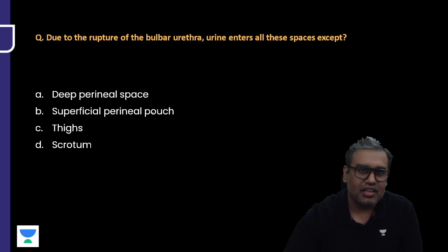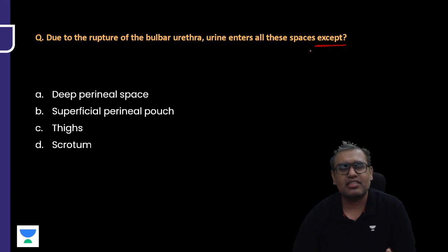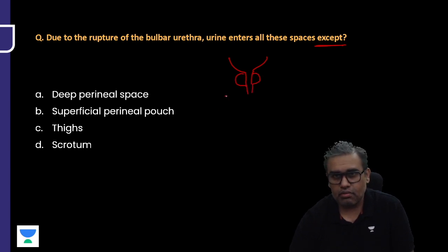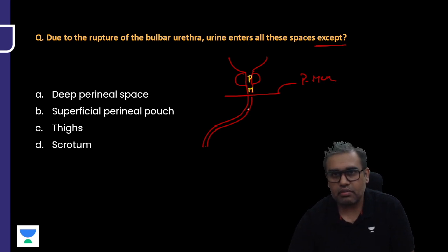One more question: Due to the rupture of the bulbar urethra, urine enters all these spaces except, somewhat like this would have been the question. Bulbar urethral rupture has become so common in the last many years that urethral anatomy should be very clear, particularly in male urethra. If you start, we have the urinary bladder, then prostatic urethra in males surrounded by prostate, a small membranous urethra bounded below by the perineal membrane, then you have the bulb of the penis, bulbar urethra, then corpus spongiosum, spongy and penile urethra goes on.